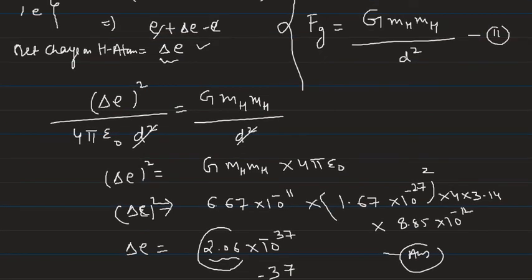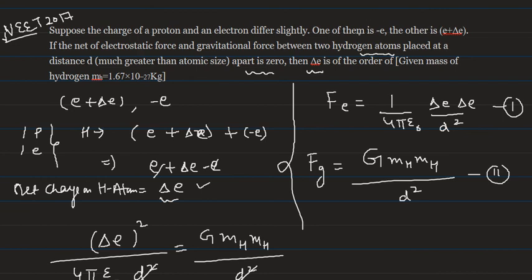So 10⁻³⁷ is the answer. It was like this problem: the charge of a proton and electron differs slightly, one is -E and one is E+ΔE. So we found the net charge on hydrogen atom, and then for two hydrogen atoms we equated electrostatic force and gravitational force.